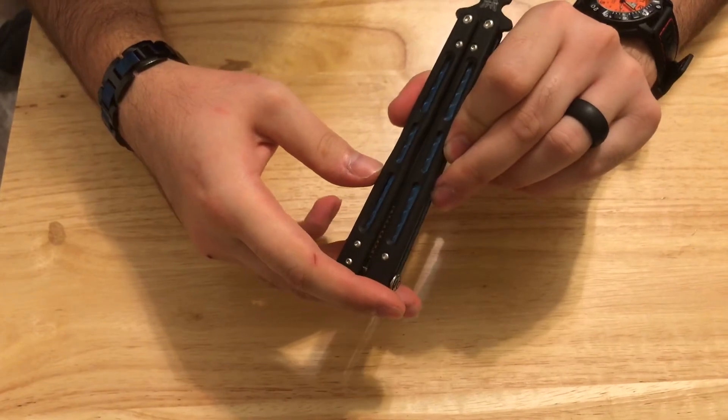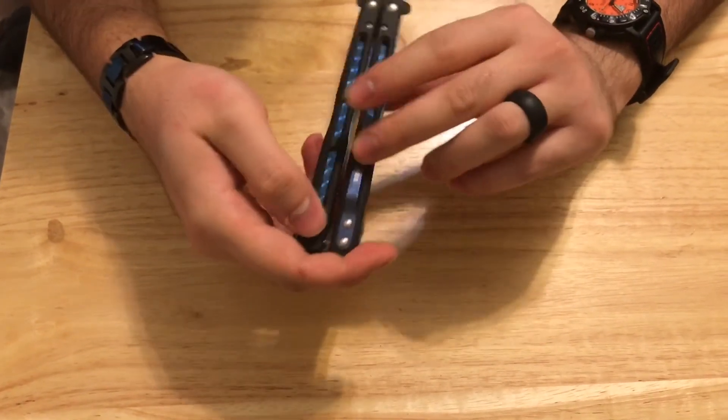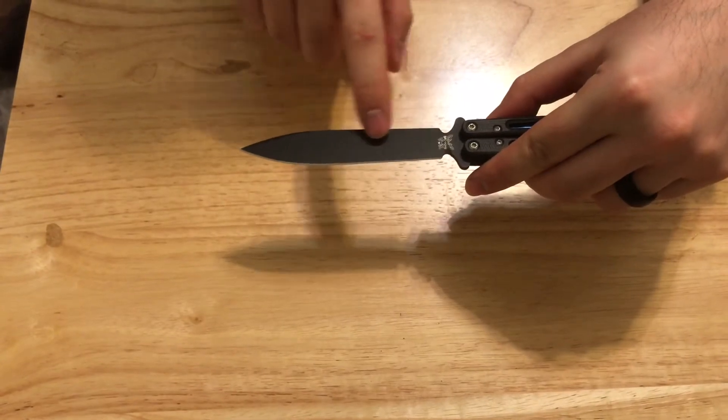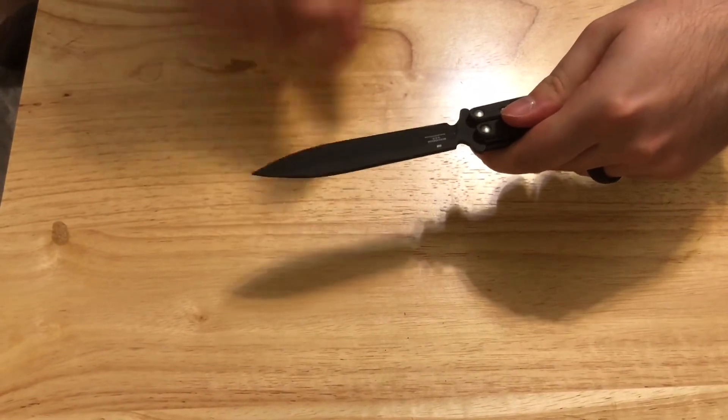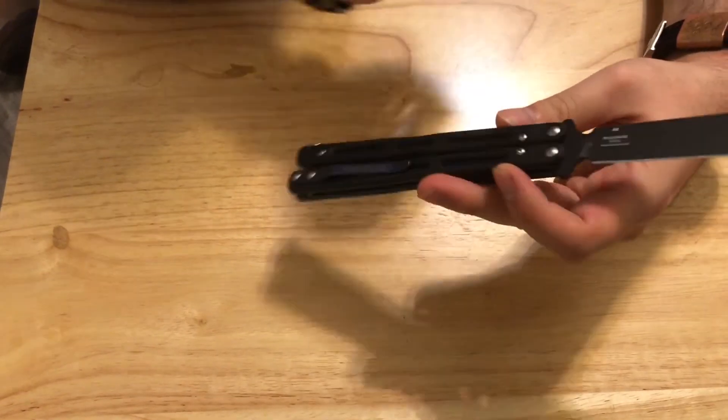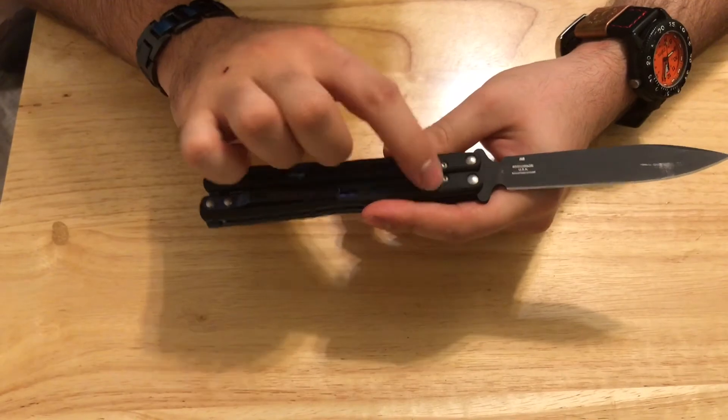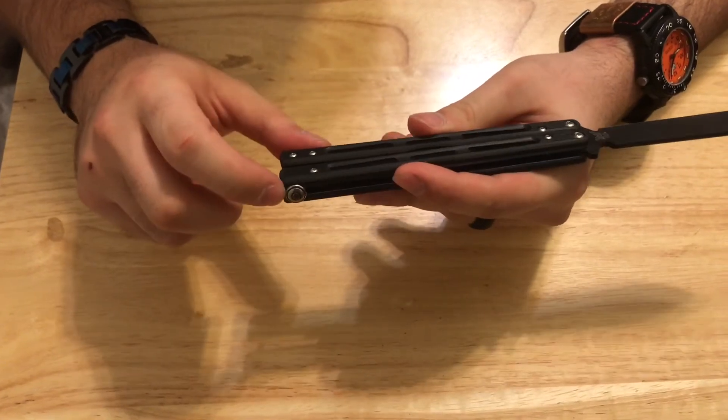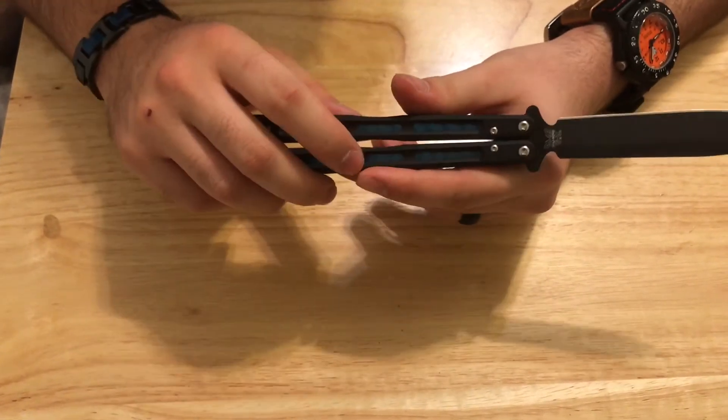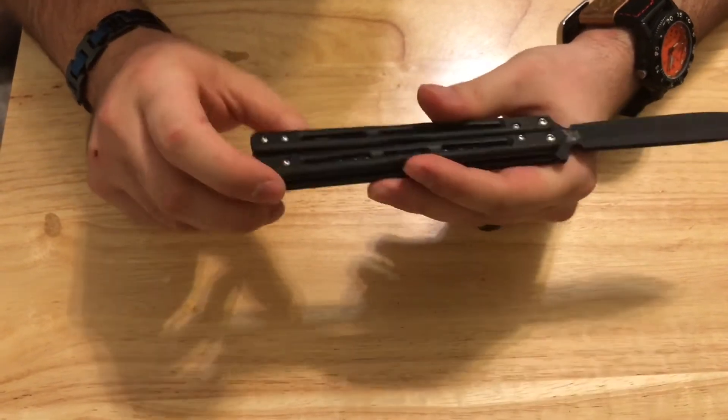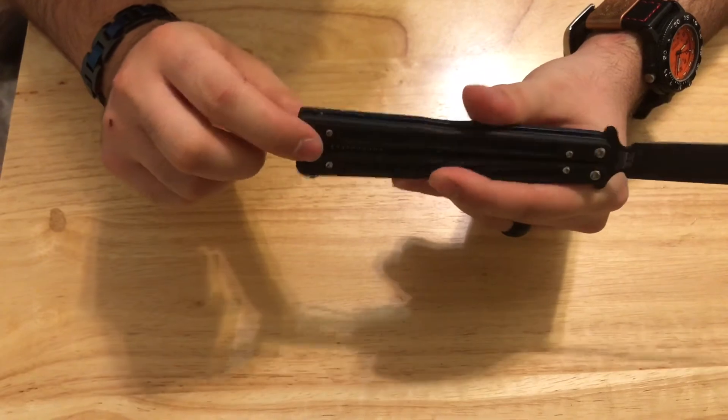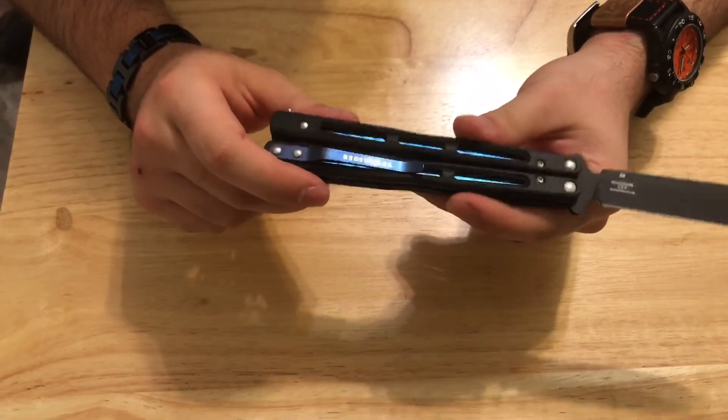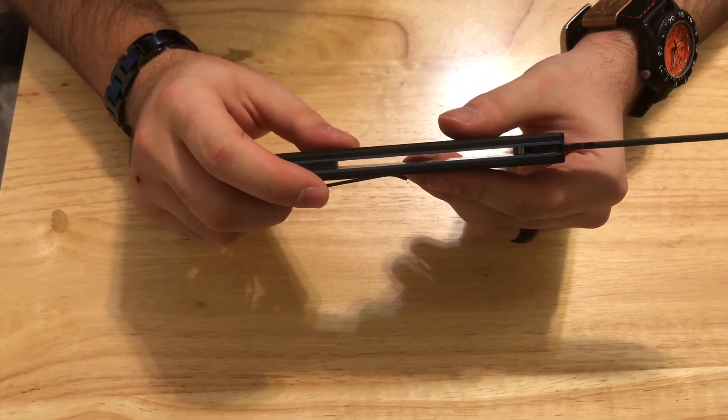That blue though, especially under sunlight, that blue is just gorgeous. I really want to put like a little blue line right here on both sides, that'd be really cool. I did also Loctite the Zen pins and the pivot screws. I believe you can take the clip off, just take these two screws off and pop it off.